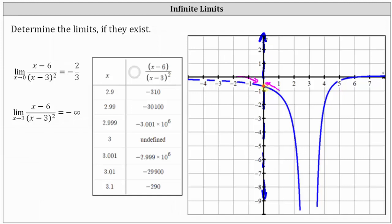Now let's verify the second limit. Because we are approaching three, we need to approach from both the left and right sides. Looking at the table first, let's approach x equals three from values less than three: 2.9, 2.99, 2.999. These values approach positive three from below, and the corresponding function values decrease without bound. Now checking from the right side, using values greater than three: 3.1, 3.01, 3.001. As we approach three from the right, once again the function values decrease without bound.